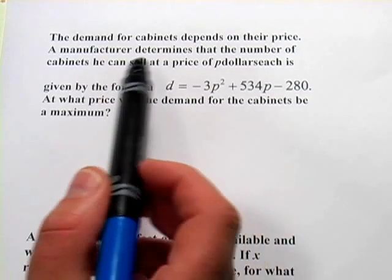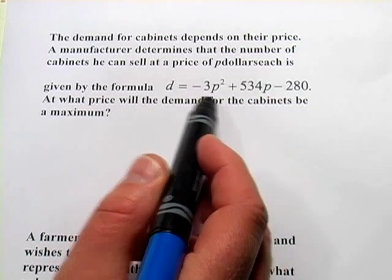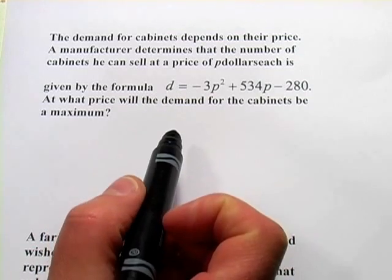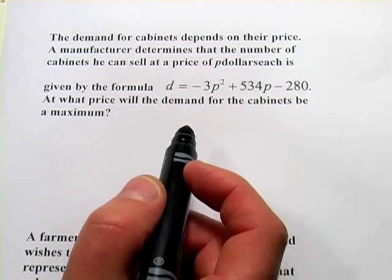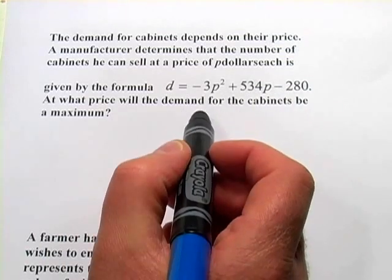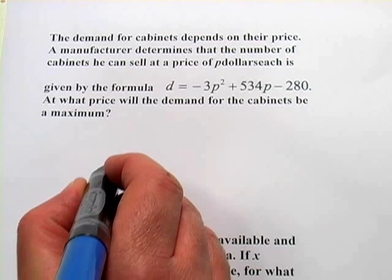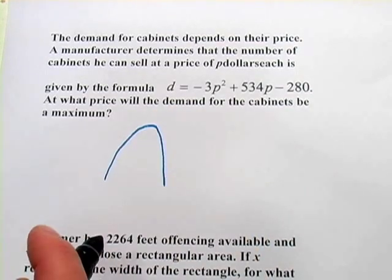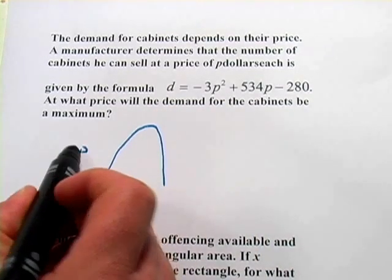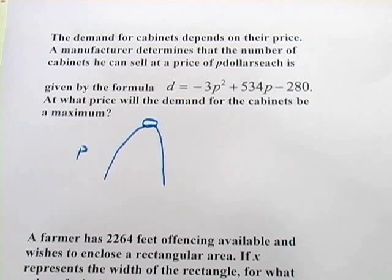What this manufacturer wants to do is figure out what is the price at which the demand is the greatest. You'll notice this is a quadratic with a negative coefficient, so this is a downward opening parabola. This function is maximized right there at the vertex.